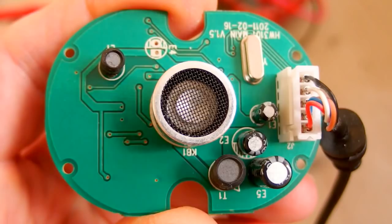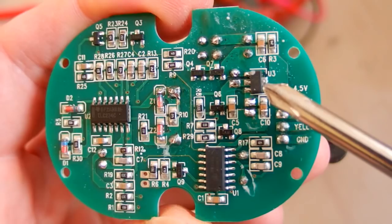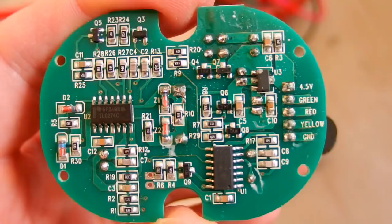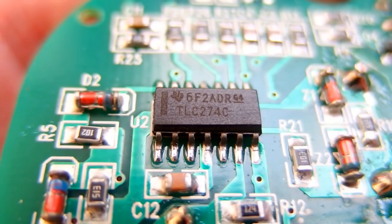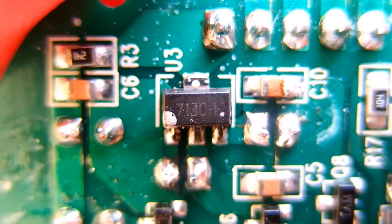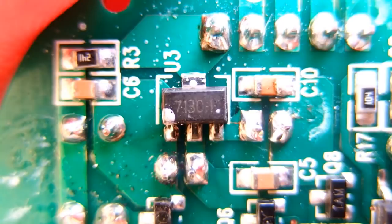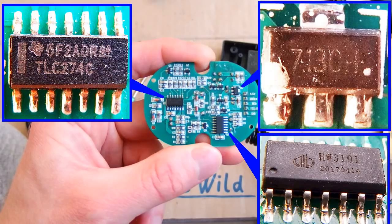So there is quite a lot of it from the other side. Two chips, 14 pins each. There is another chip, maybe a regulator or just a power transistor. Another six or seven transistors in a tiny package. And a lot of resistors, capacitors, diodes and that's it. The chips are TLC-274C and the other one is HW3101. And this one is something like 7130-1 or 713C-1 or dash 4. It's not very easy to read. So let's see a better picture of it.